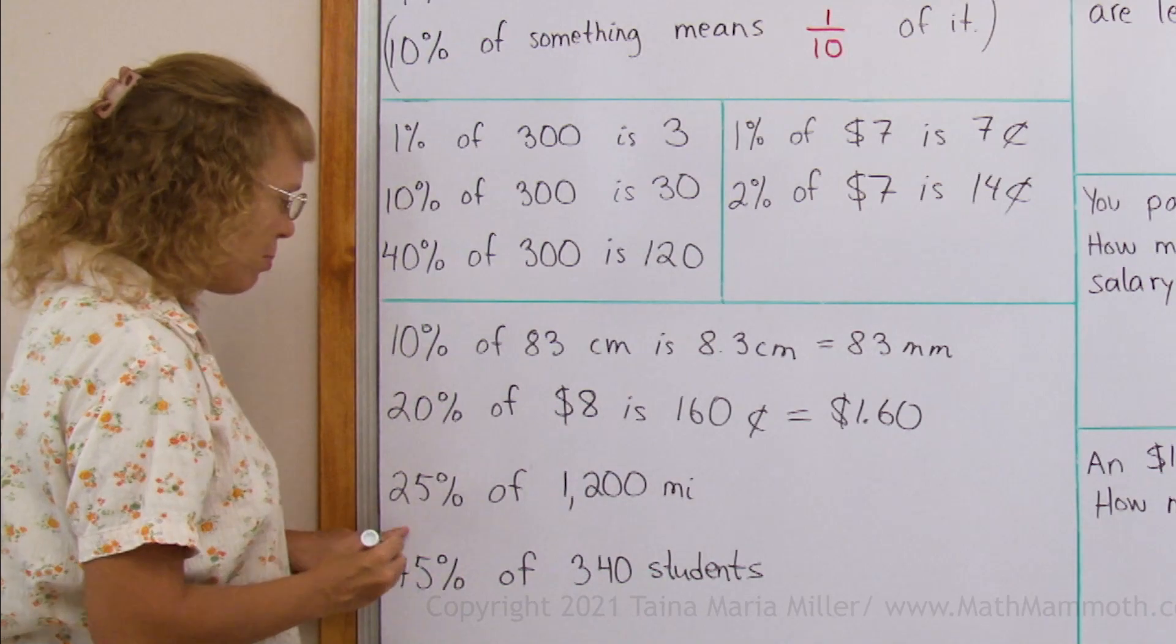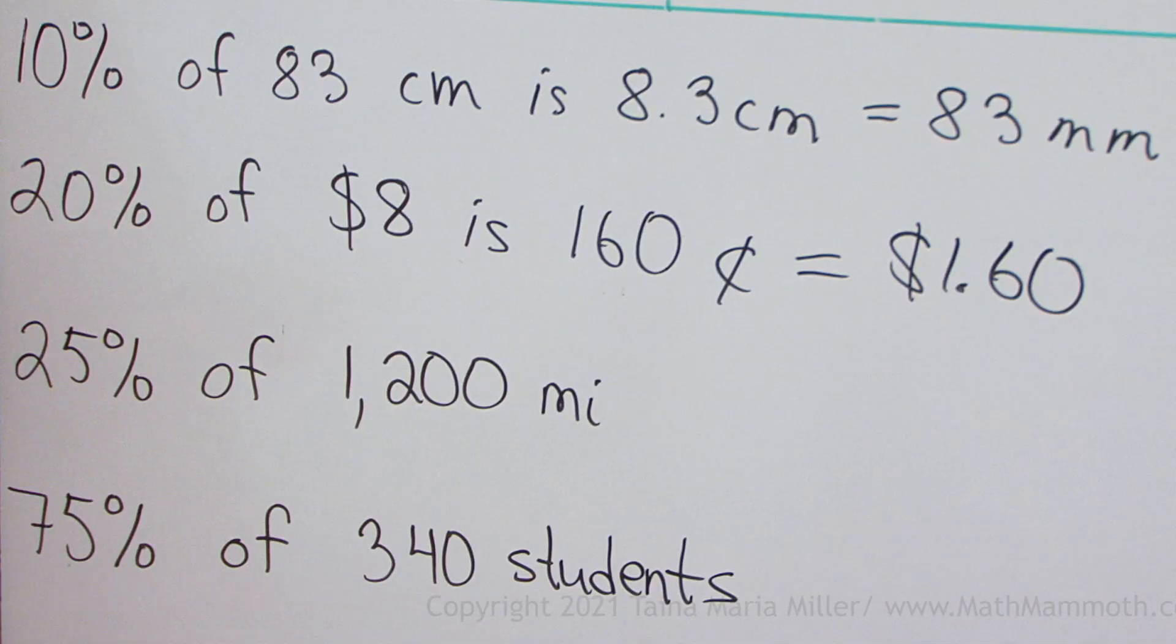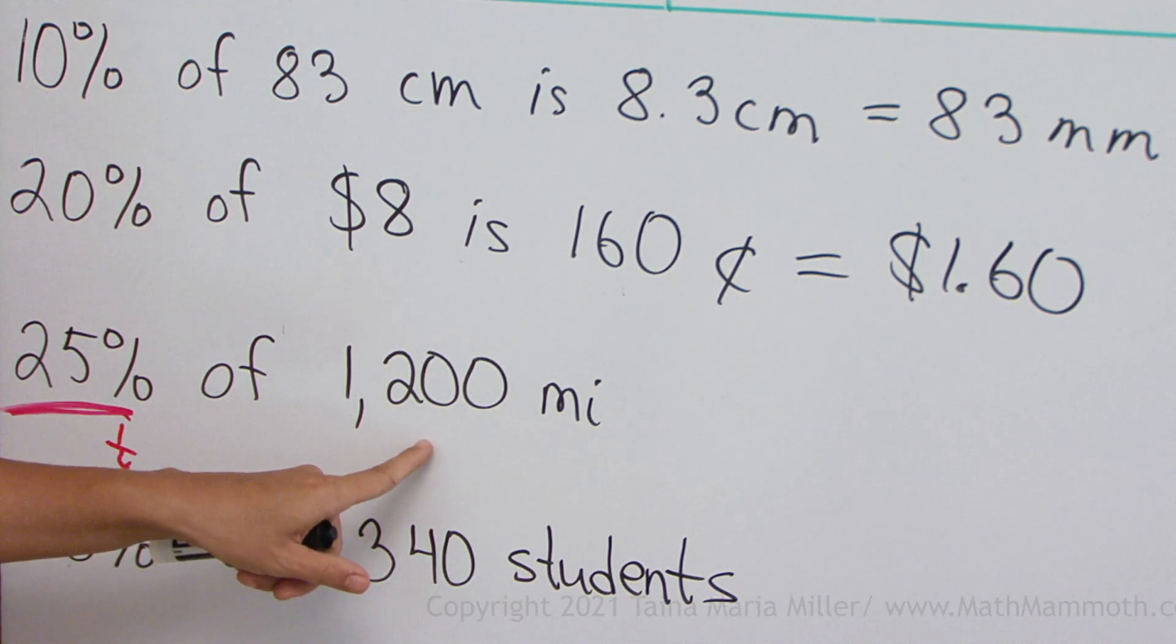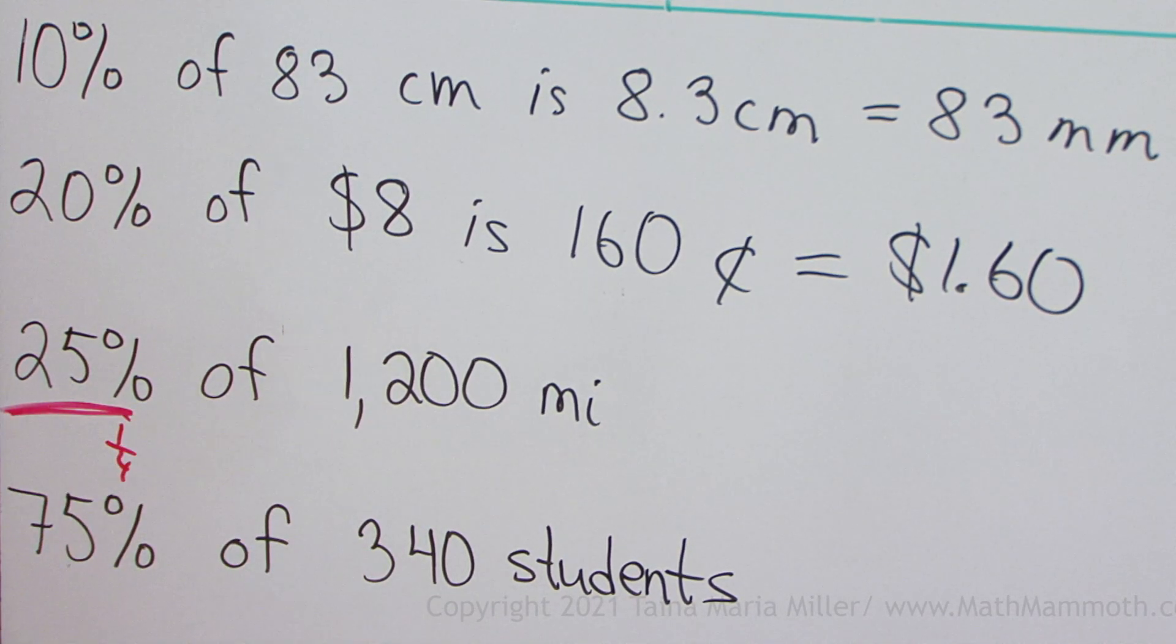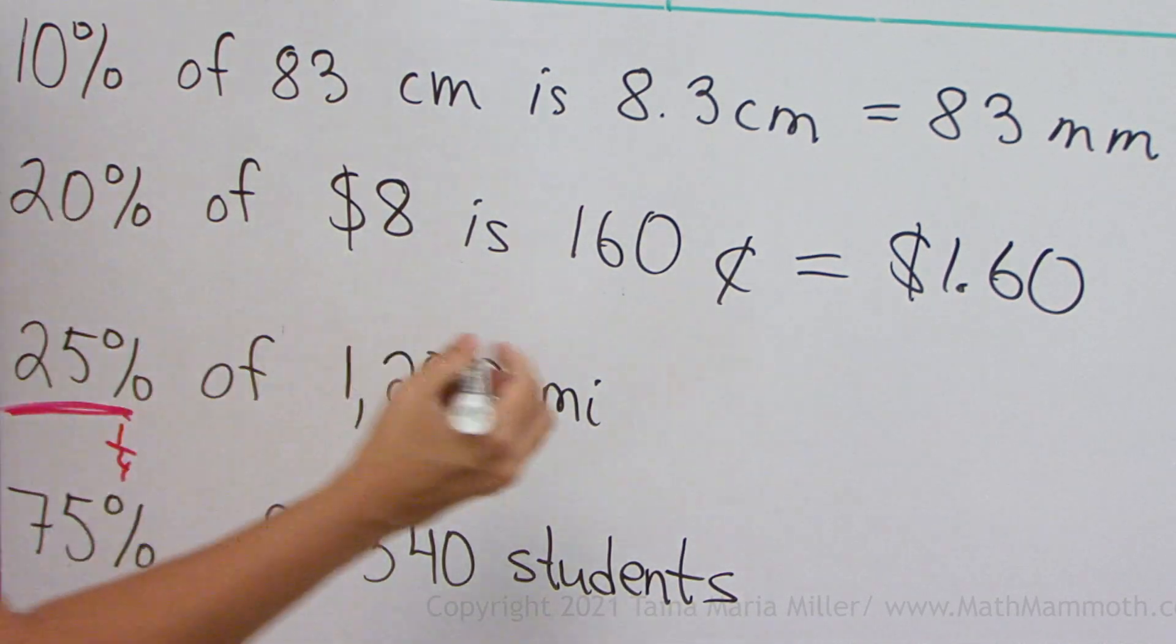Twenty-five percent of thousand two hundred miles. Now there's another mental math shortcut that we can use. Twenty-five percent is the same as a certain fraction. It is the same as one-fourth. So we can divide by four to find the one-fourth part. That divided by four is three hundred miles.